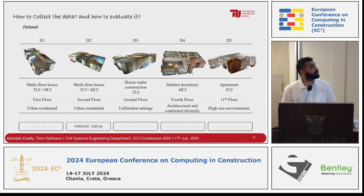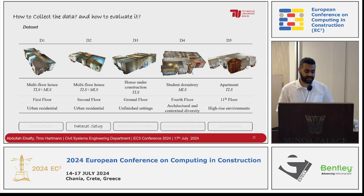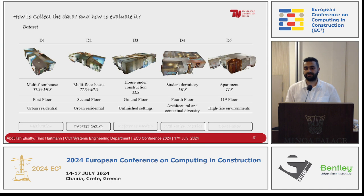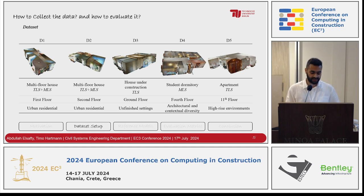Here is an example of the dataset. We have five datasets: the first and second are the same house — first floor and second floor. We have a house under construction, a student dormitory, and an apartment on the living floor — this one is my house. We tried to take data from every place we could, representing different settings: urban residential, unfinished construction, and high-rise environments.